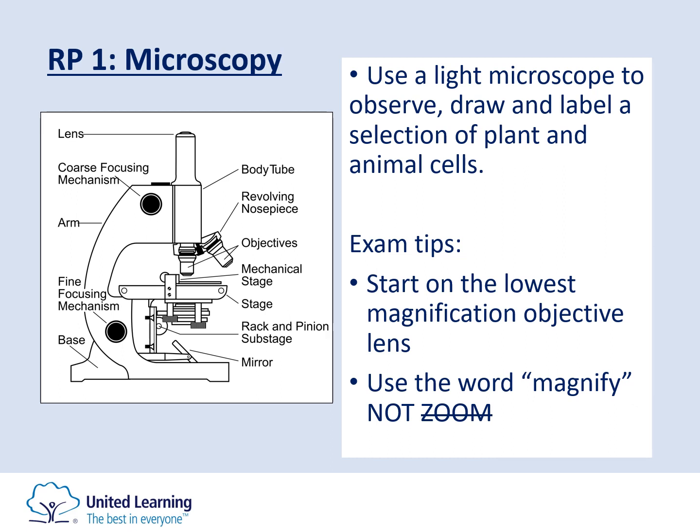The eyepiece already magnifies the specimen 10 times larger than what your eye can see. As we move down the microscope you'll see the coarse focus and the fine focus closer to the bottom. The coarse focus is used to increase the magnification of the image — it pulls the stage closer to the objective lenses. The fine focus is used to improve the clarity of the image. Once you've used the coarse focus and identified the specimen at the correct magnification, you can use the fine focus to improve the clarity.